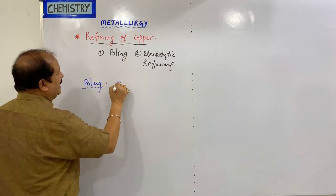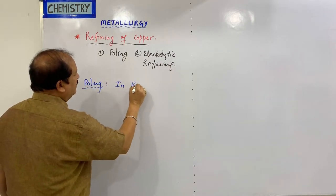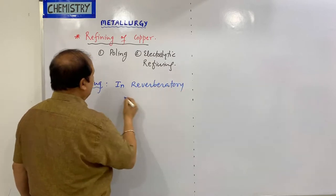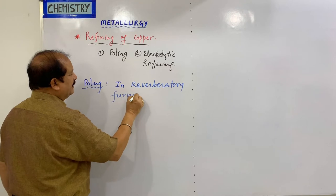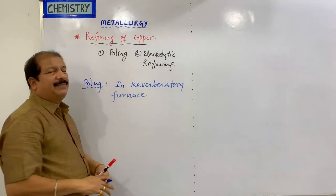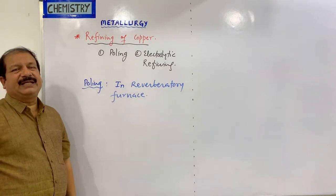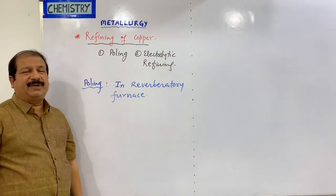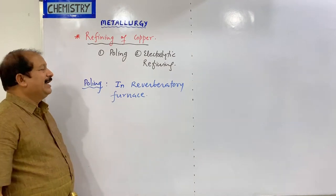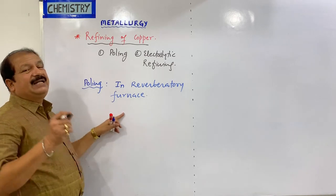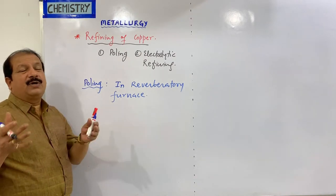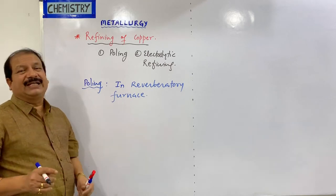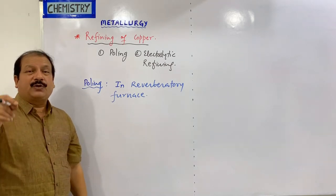This is a reverberatory furnace. In the reverberatory furnace, we have copper here. There is a possibility that there is an oxide form of impurity. So we use green color poles — green color poles. We use them.